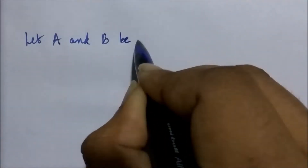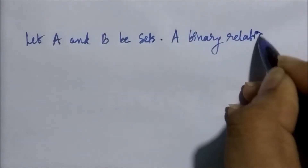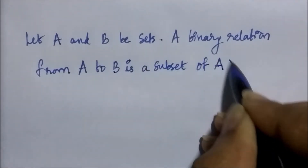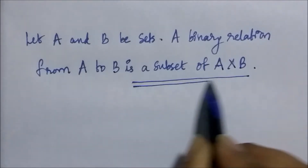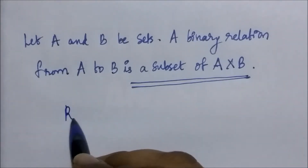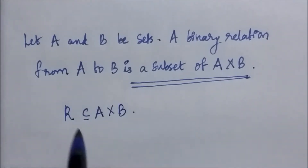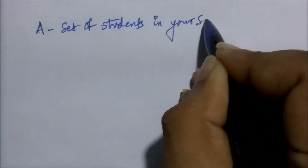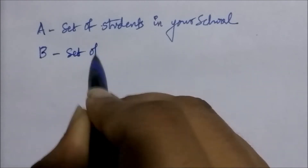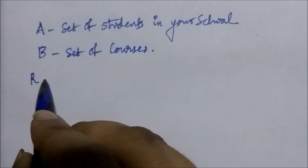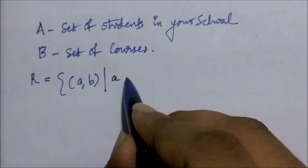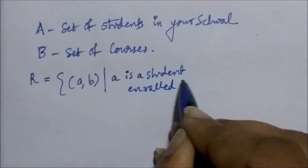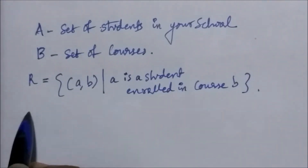Let's formally define what a relation is. Let A and B be sets. A binary relation from A to B is a subset of A cross B. For example, let A be the set of students in your school and B be the set of all courses. A relation R can be defined as: R equals the set of all (a, b) such that a is a student enrolled in course b.